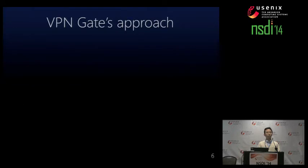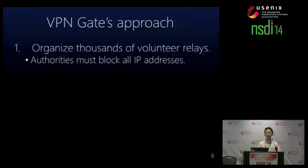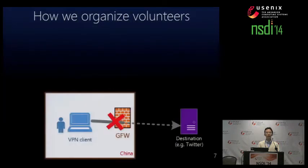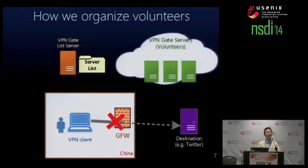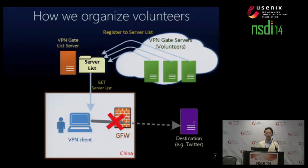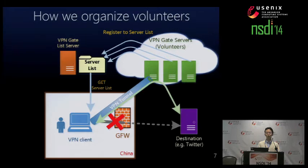This slide shows VPN Gate's approach. First, we organize thousands of volunteer relays in order to force authorities to block all IP addresses. We created the VPN Gate list server, which maintains the latest server list. The server list contains all IP addresses of running VPN Gate relay servers, hosted by thousands of volunteers. Each volunteer computer runs our relay program and registers itself to the server list. Then the user can get the server list, choose one server, establish a VPN tunnel, and connect to the destination server.